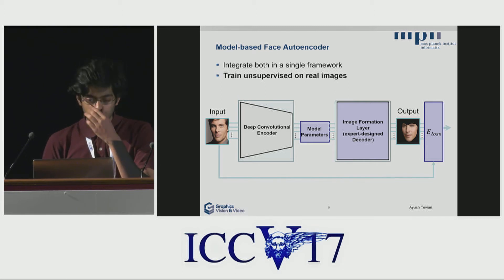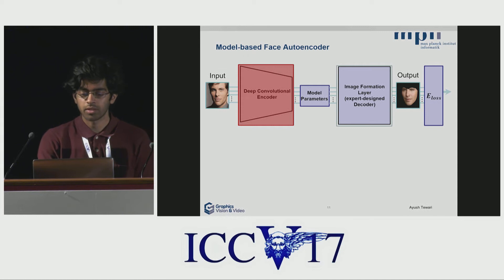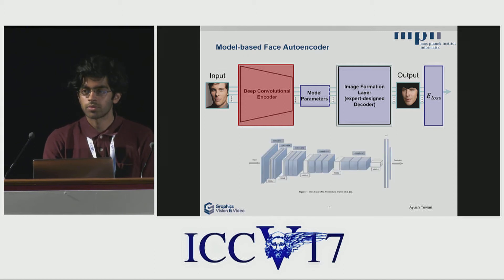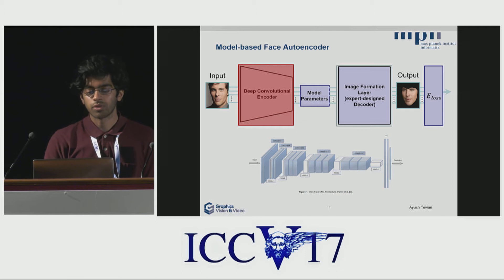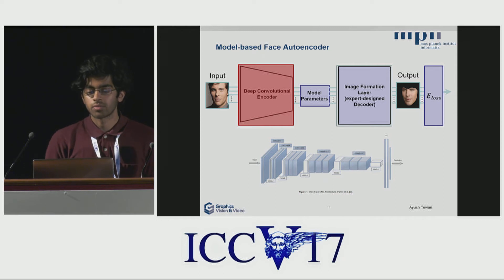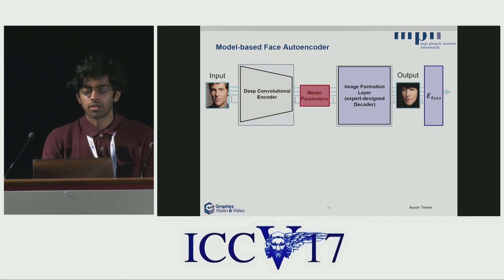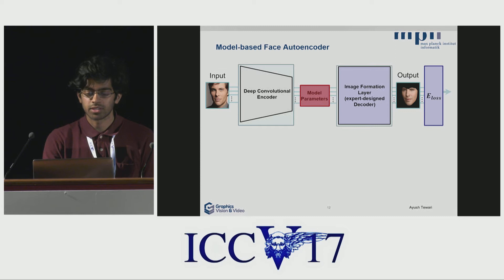The convolutional encoder is not our main contribution. In our experiments, we use either VGGFace or AlexNet with a fully connected layer at the end, which brings us to our parametric space. However, any CNN could be used as the encoder. The encoder gives us the model parameters, which semantically define the reconstruction.